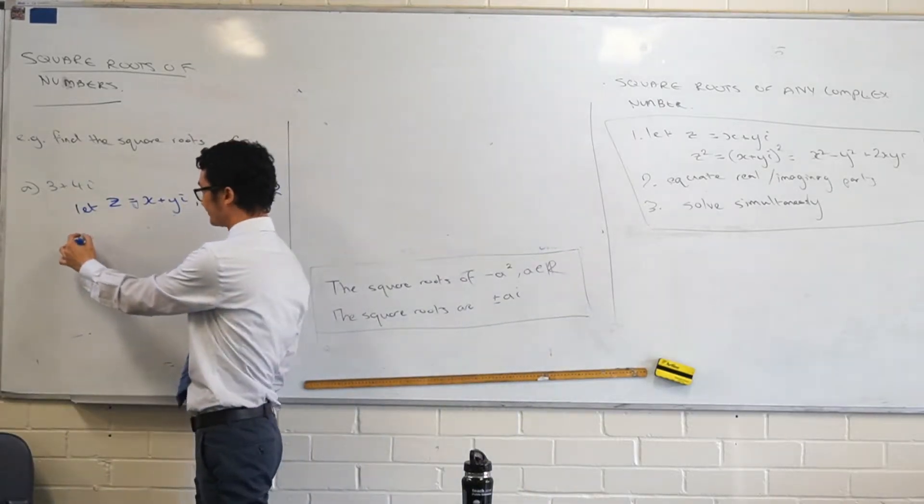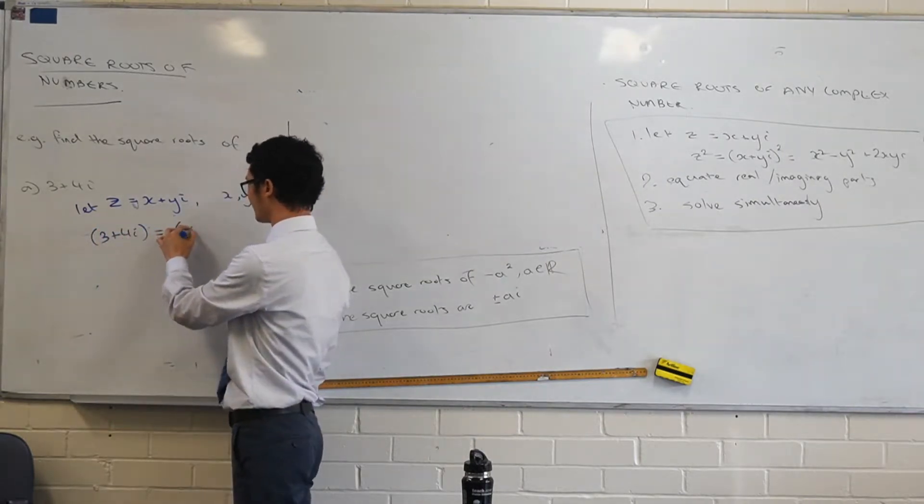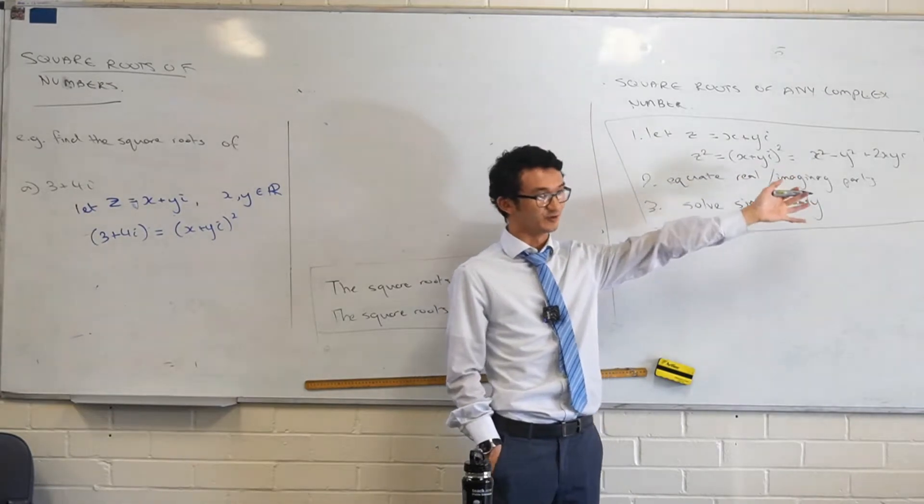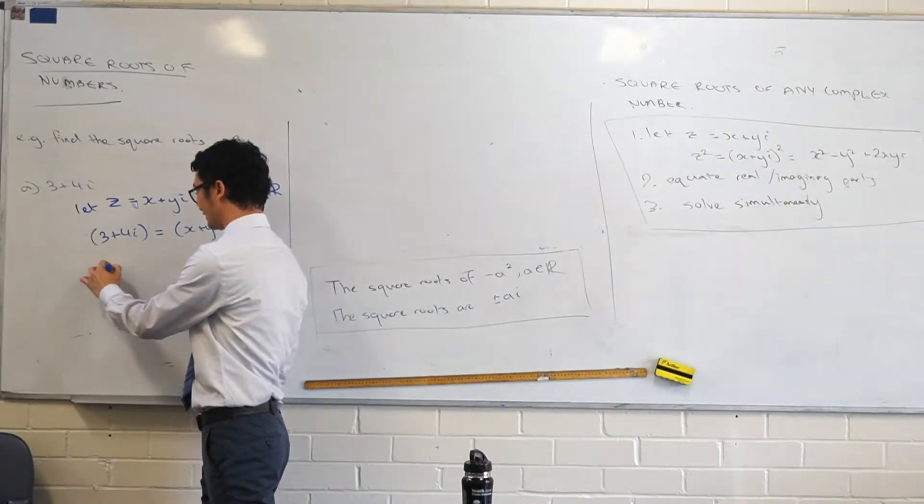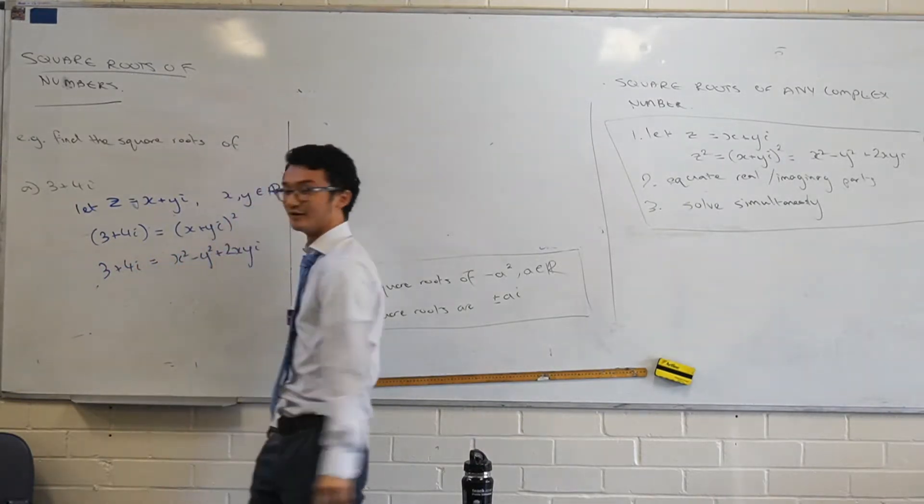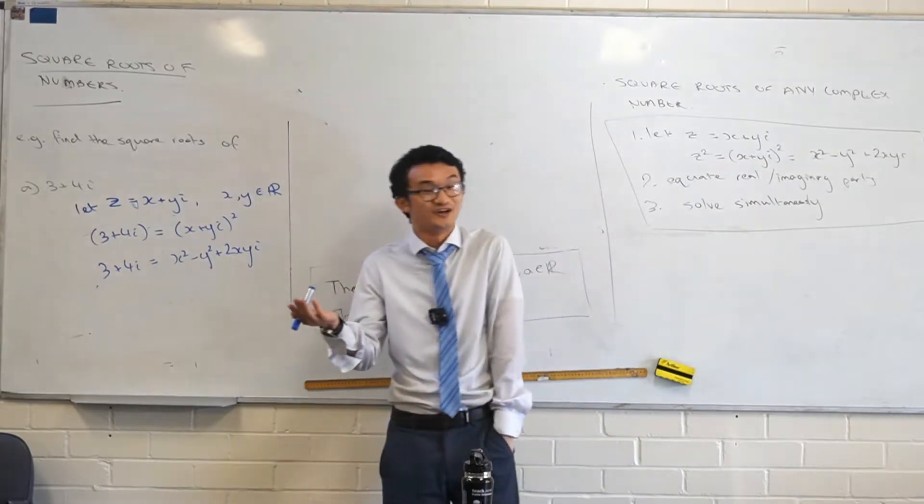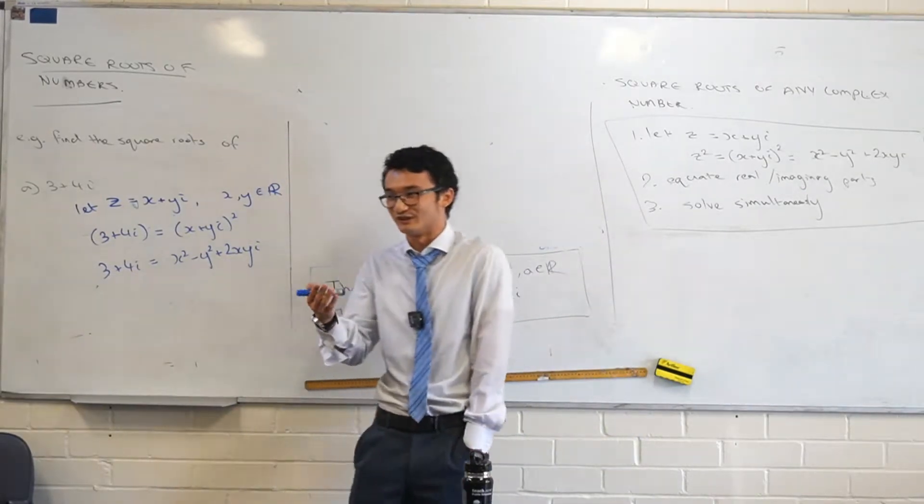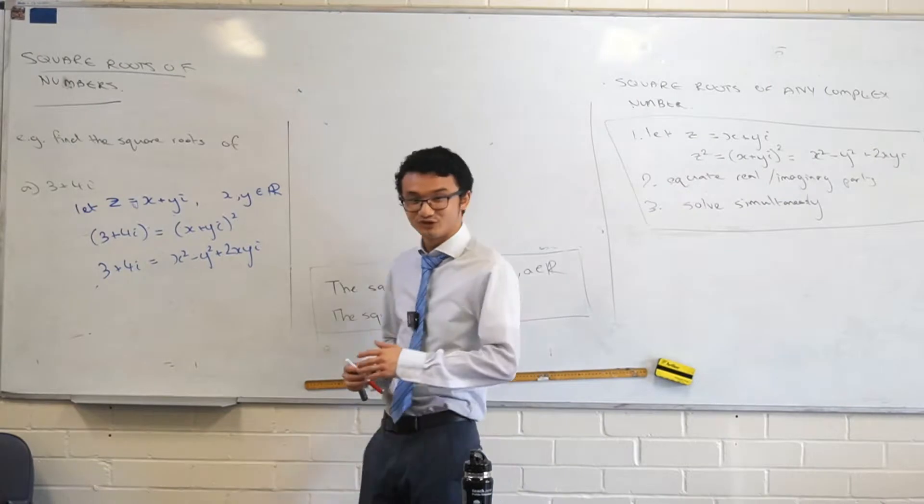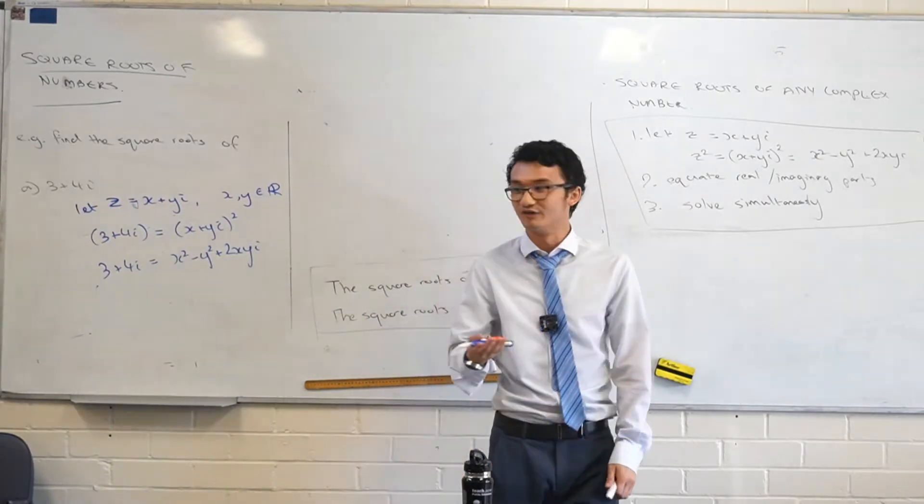So, we do that. We say let z equal to x plus yi. And then, so we say then that if we're looking for the square roots, we're saying that 3 plus 4i is equal to x plus yi all squared. And at this point, you can probably just memorize the expansion there. You don't have to go through that whole process. So, we can say that 3 plus 4i equals x squared minus y squared plus 2xyi. Just keeping in mind that if you are going to memorize the expansion, you do memorize it correctly. If you are in doubt, just go ahead and do the expansion. If you're not 100%, better to take it a bit more slowly than to make a mistake here. That's going to cost you.